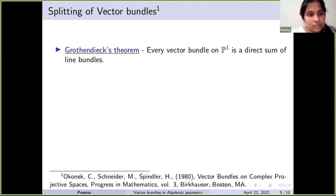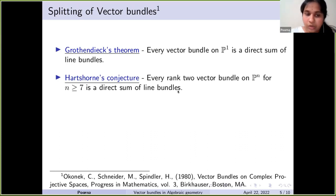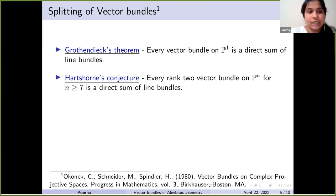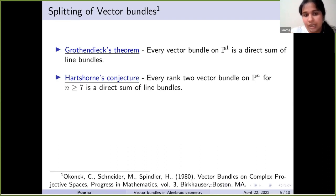Before going further, here is a fun aside: Hartshorne's conjecture, posed around 1979, states that every rank-two vector bundle on Pⁿ for n ≥ 7 is a direct sum of line bundles. This is still open. The geometric interpretation is that any codimension-two subvariety of Pⁿ, for n ≥ 7, is a complete intersection variety — defined precisely by the vanishing of two polynomials. This is not always true in general, but if Hartshorne's conjecture holds it is true for Pⁿ with n ≥ 7.